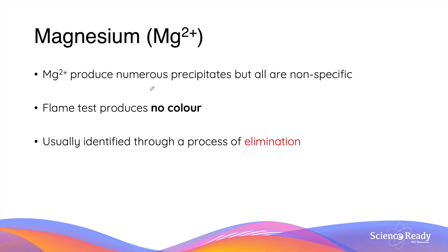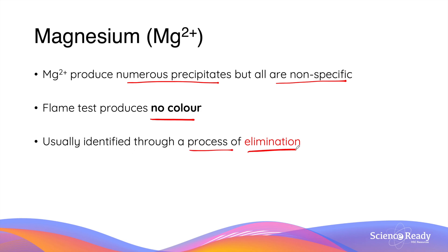Magnesium ions are quite difficult to identify as they produce numerous precipitates which are all non-specific to magnesium. The flame test is also not useful as magnesium produces no color. Therefore, among the metals, magnesium is usually identified through a process of elimination.